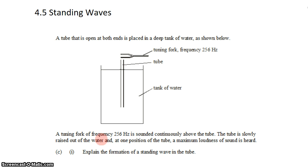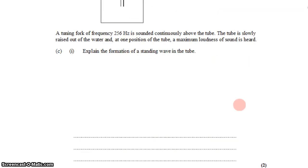And we sound a tuning fork with a frequency of 256 hertz continuously above the tube. The tube is slowly raised out of the water, and at one position of the tube, we hear a maximum loudness of sound. So depending on the height of the tube, the sound we hear resonating out of the tube varies. First we want to explain the formation of the standing wave in the tube. Why does it form?